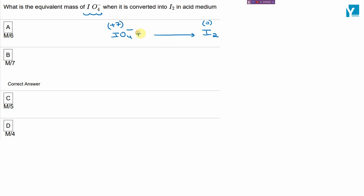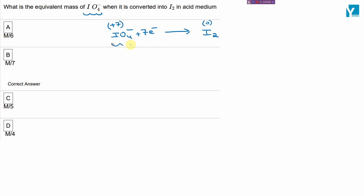As you can see, per iodate ion, iodine gains 7 electrons. So the valence factor for the periodate ion is 7, and the equivalent weight is molecular weight divided by the valence factor, which is MW/7. So our answer is option B.